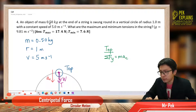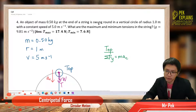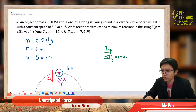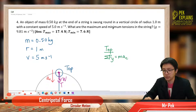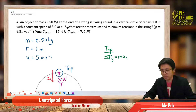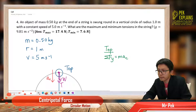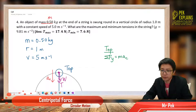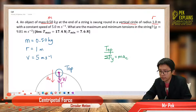An object of mass 0.5 kilogram at the end of the string is swung around in a vertical circle of radius 1 meter with a constant speed of 5 meters per second. What are the maximum and minimum tensions in the string? So the information given: we have the mass, it's a vertical circle, we have a radius r, and we have the speed v. These are all important information.